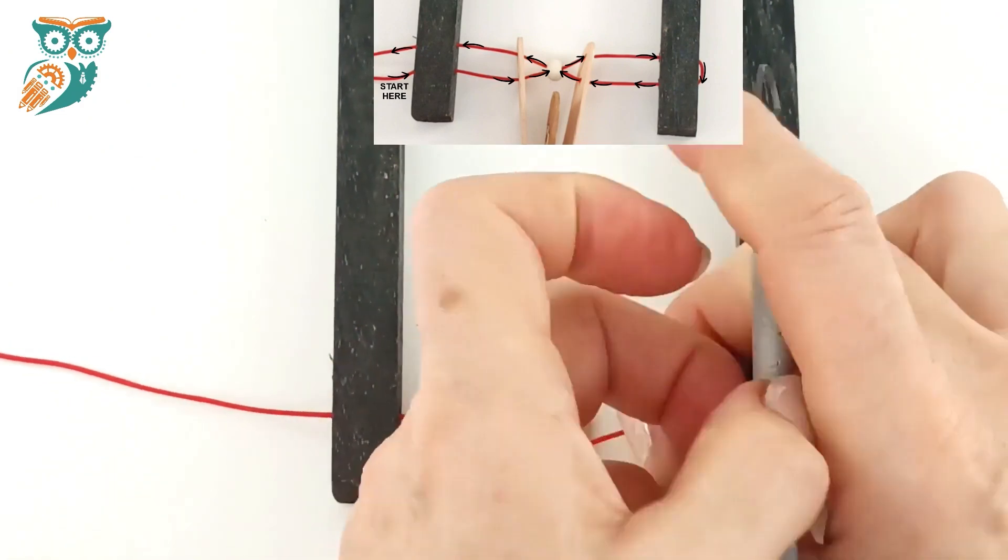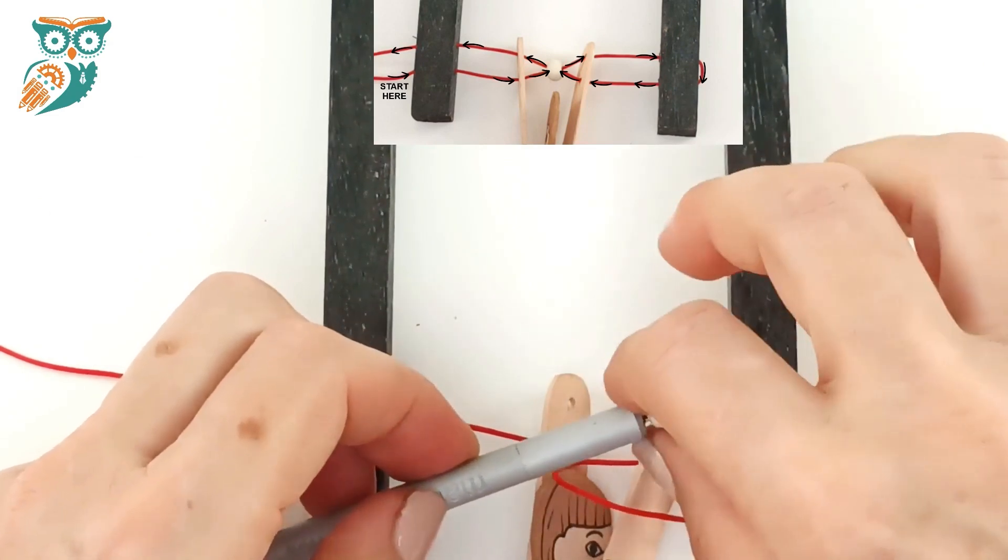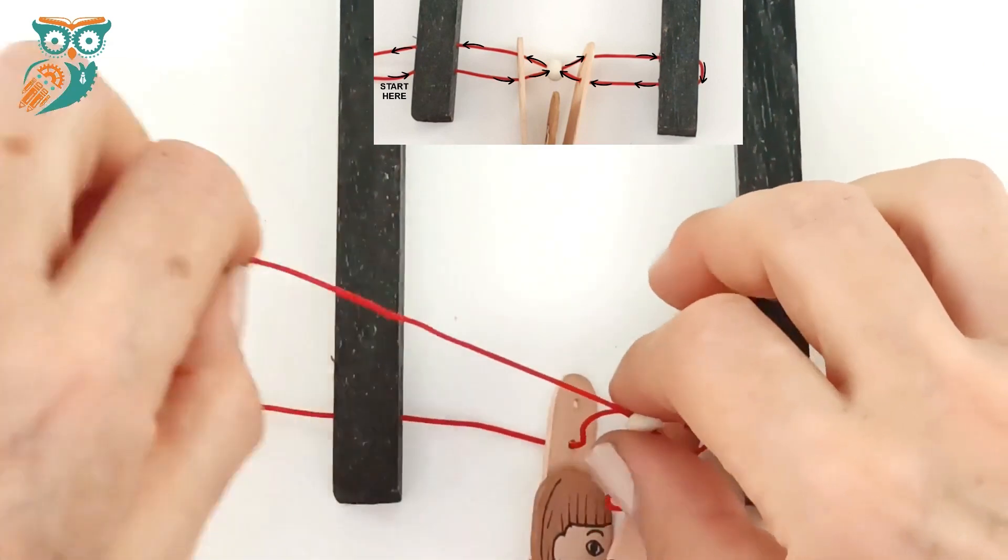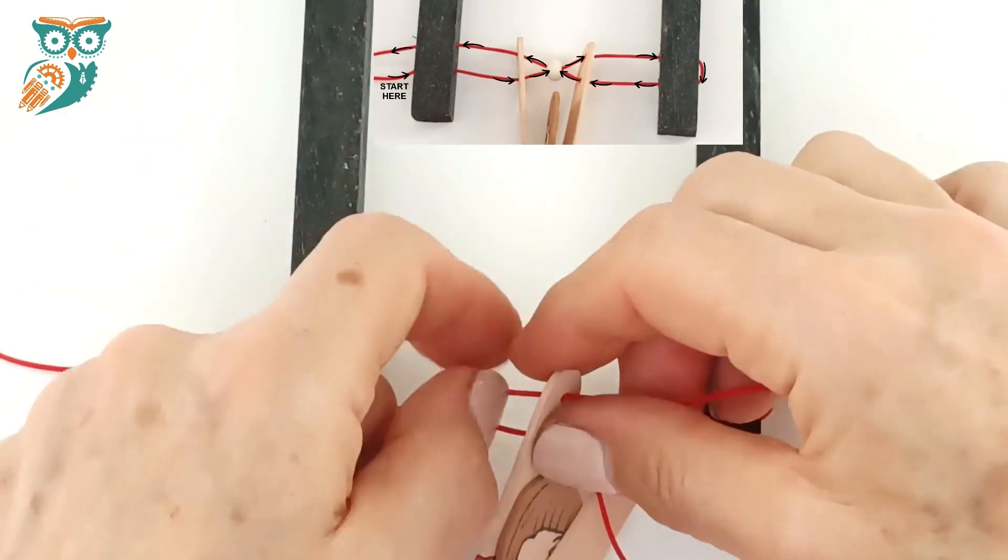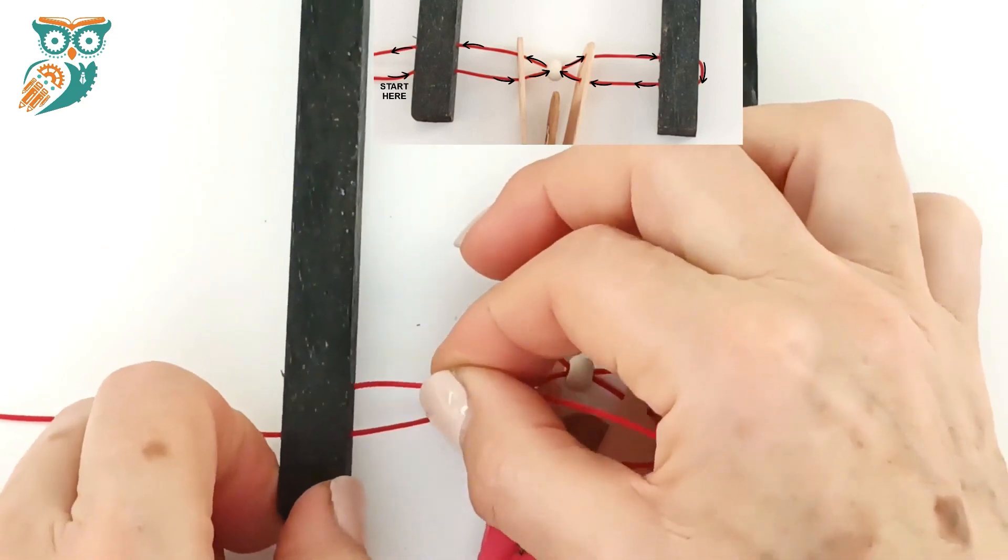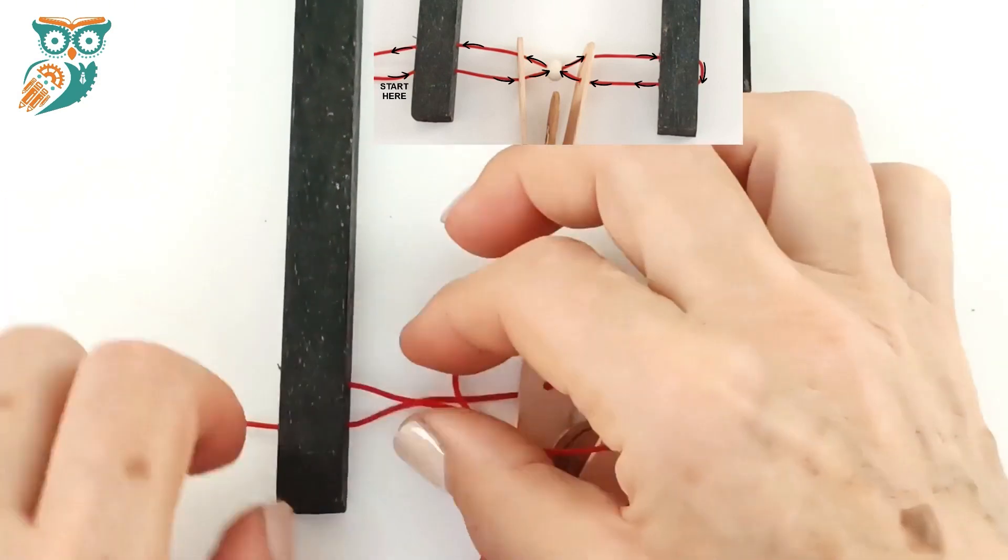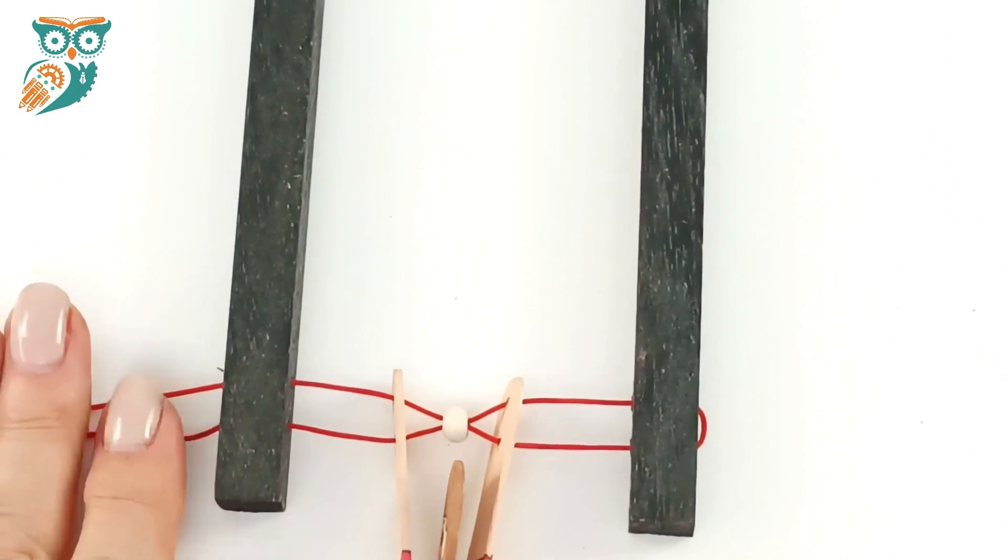So this is where you just put the needle threader through the hole, loop the string through it, and then pull it through. Now we're going to go through the top hole on the left hand and then the top hole on the left side of the frame. So as you can see, it kind of crisscrosses through the middle of the hands at that bead point.